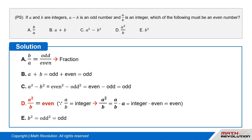B squared: odd squared will be odd. Thus, D is the correct answer. Answer: D.